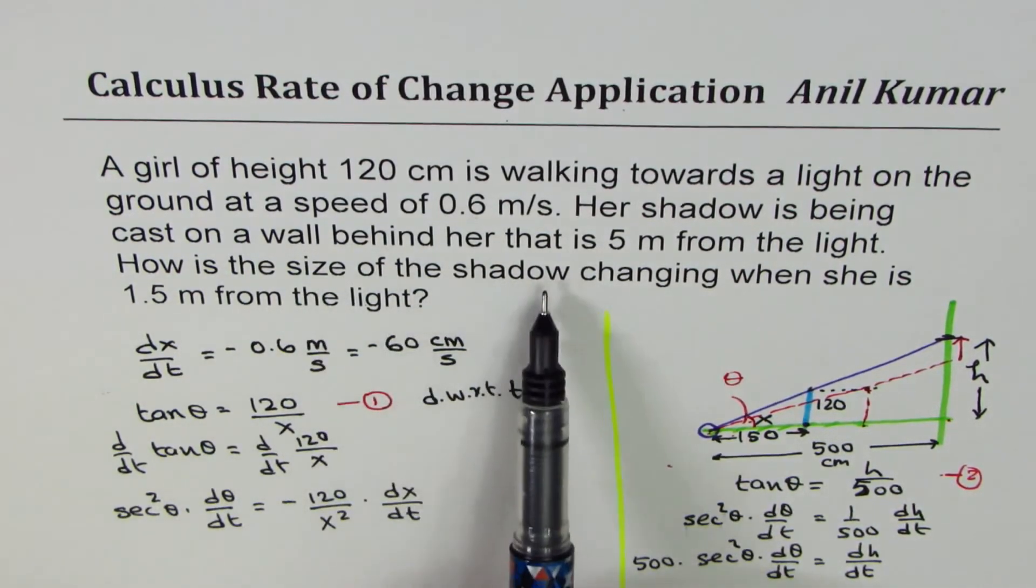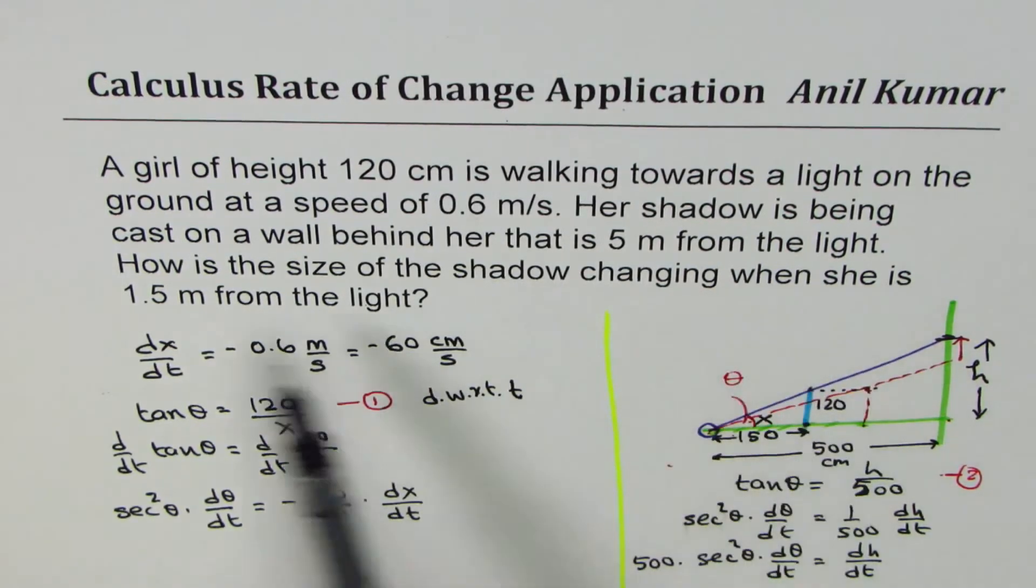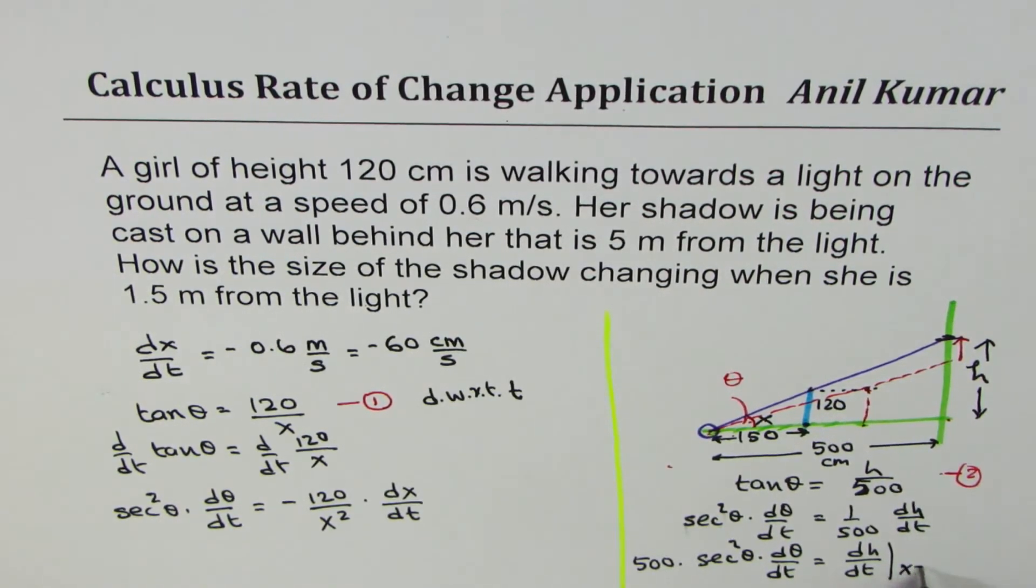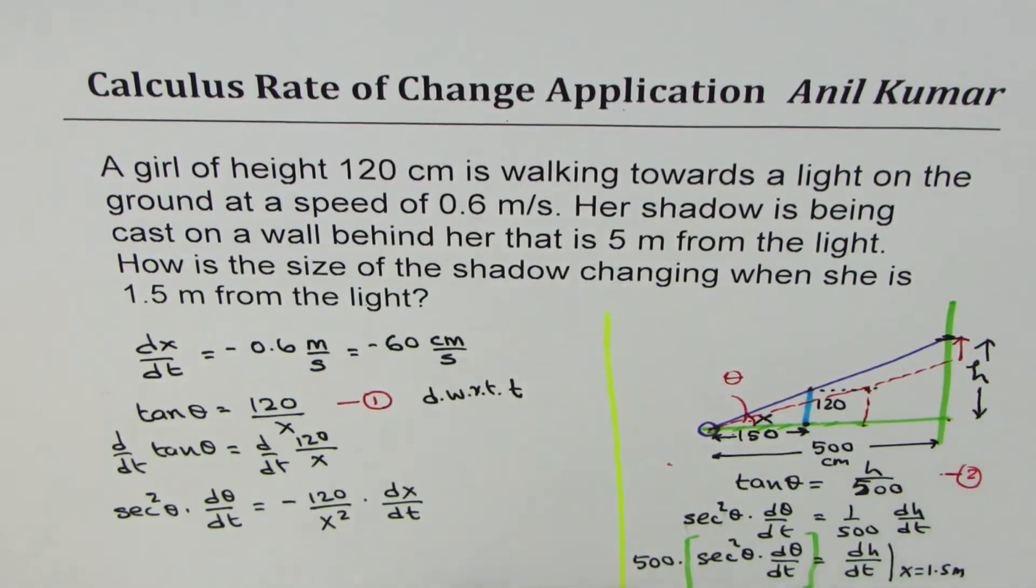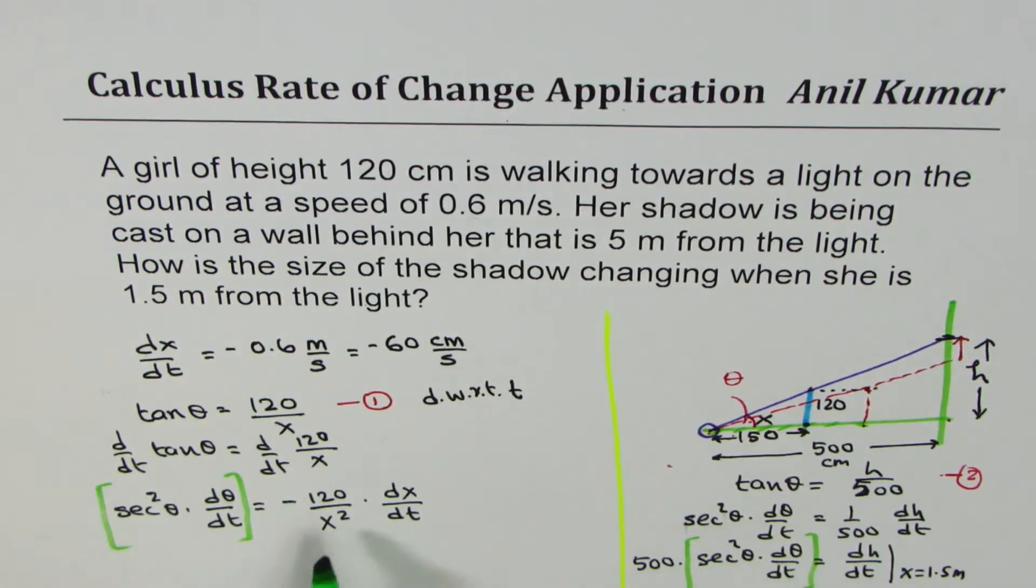How is the size of shadow changing when she is 1.5 meters from the light? So basically, we want to find what happens when x equals to 1.5 meters. dh/dt is all this. Now, as you can see, we already know what this term is. This term is right there. Secant square theta d theta/dt is nothing. But in terms of x, -120 over x square dot dx/dt.